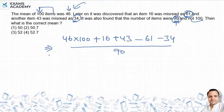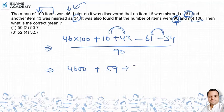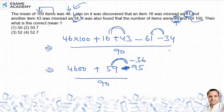So here is what we are going to do. 4600 plus the two values we add, which is 59, minus the two incorrect values, which is 95. Divided by 90. If we calculate, 59 minus 95 is minus 36.